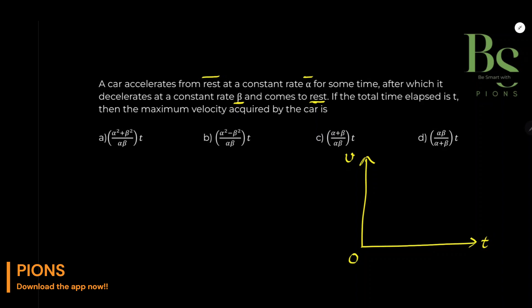Question में यह बोला है कि एक car जो है वो initially accelerate कर रही है alpha rate से — O से किसी point A पर जा रही है। After which it decelerates, तो यहां से इसकी speed वापस कम होने लगती है और decelerate होके यह वापस आ जाती है, deceleration की rate है beta। Total time lapsed है T।